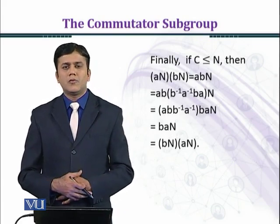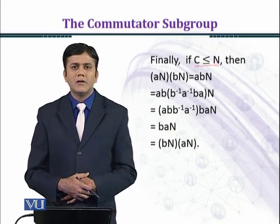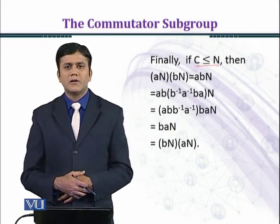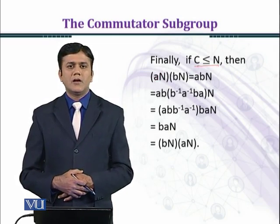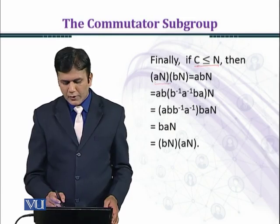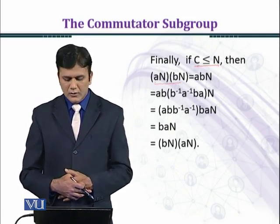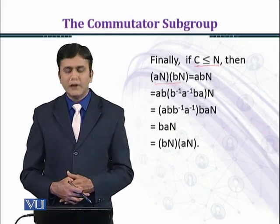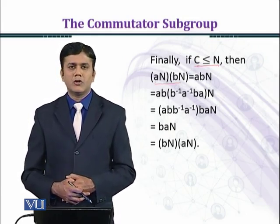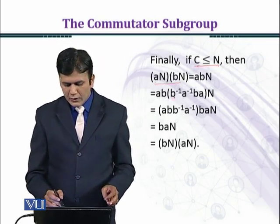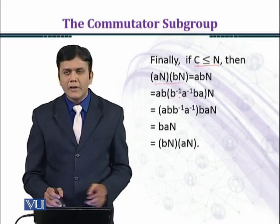Now we shall prove the converse statement. If C, the set of all commutators, is a subgroup of N, then we want to show that G over N is abelian. We pick two arbitrary elements aN and bN of G over N, where a and b are arbitrary elements of G. We obtain aN · bN = abN, because N is a normal subgroup of G and coset multiplication is well-defined. We then write ab as b⁻¹a⁻¹ba · (b⁻¹a⁻¹ba)⁻¹ · ab.